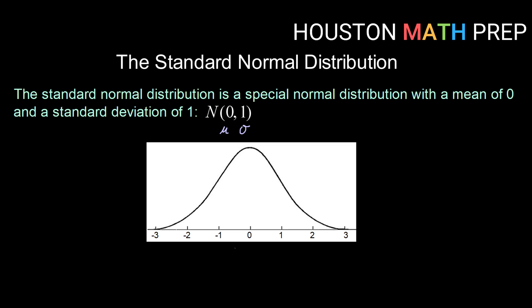So if we were to graph that out, we would place our mean right in the center. And then at each tick mark, we would count out one standard deviation. So 0 plus 1 gets us to 1, 1 plus 1 gets us to 2, and 2 plus 1 gets us out to 3. And we would do the same thing in the negative direction.